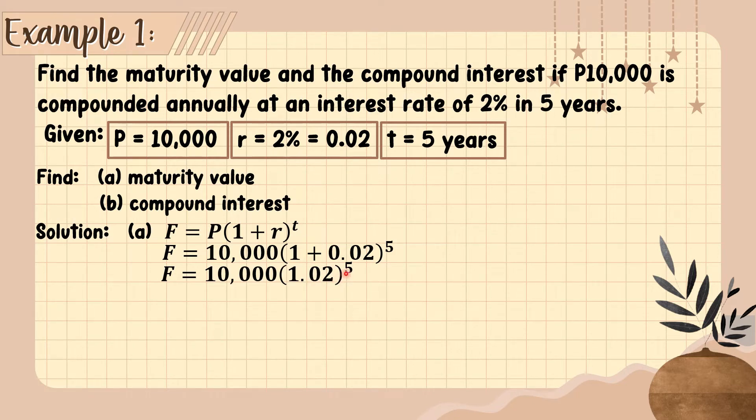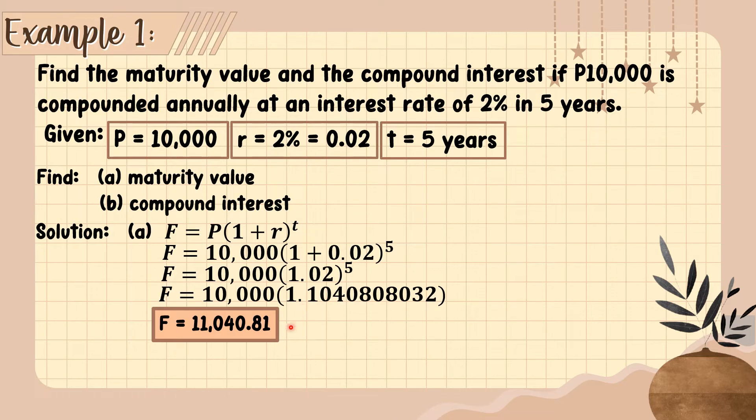Next, multiply 1.02 to the fifth power. So 1.02 times 1.02 five times, the answer is 1.1040808032. We're going to copy all of this and multiply it by 10,000. The answer is 11,040.81.